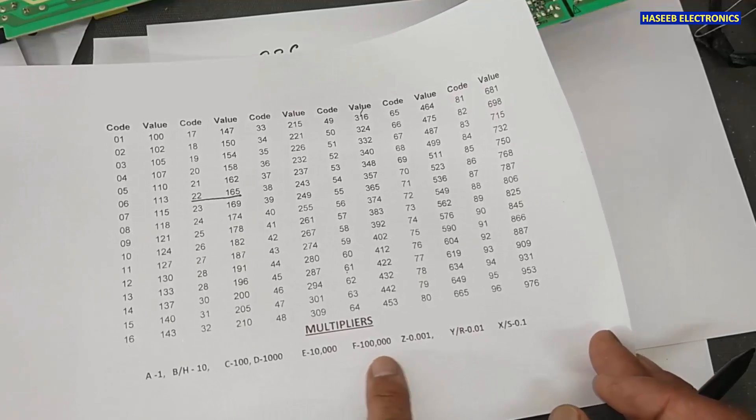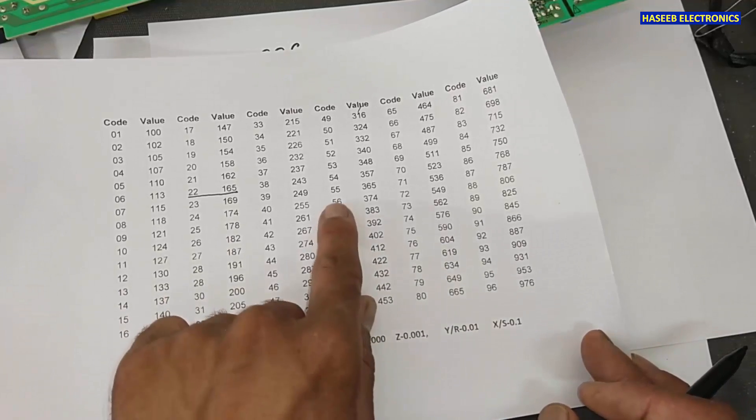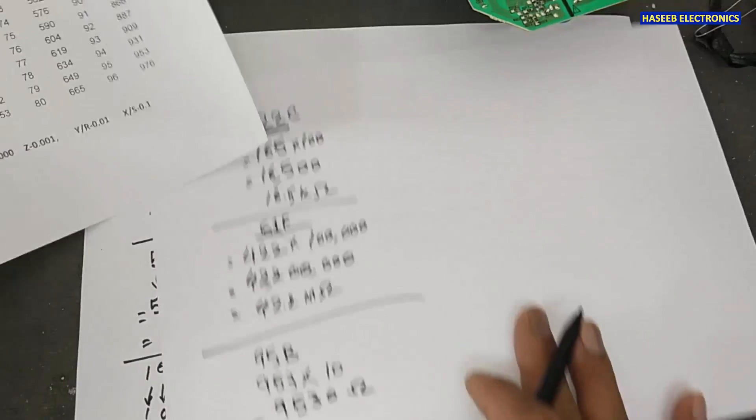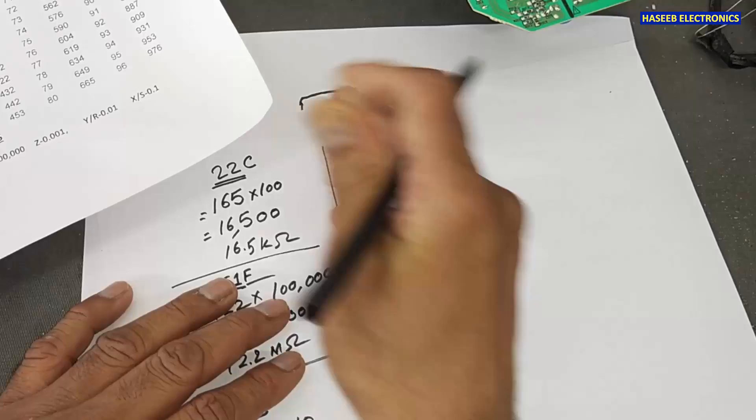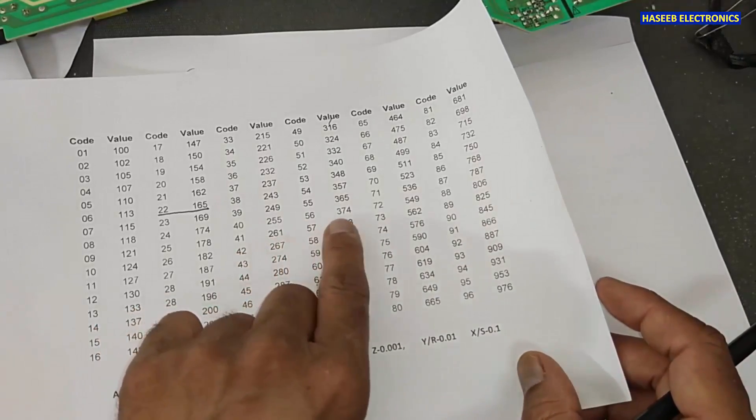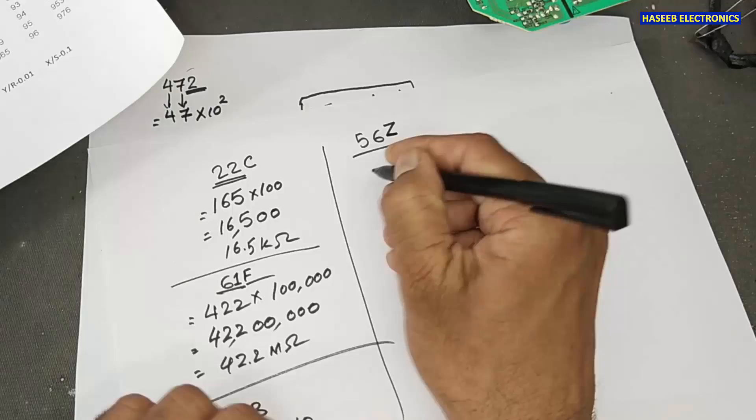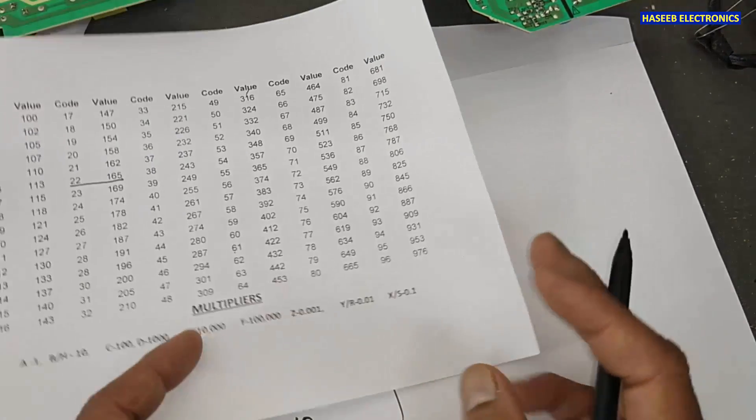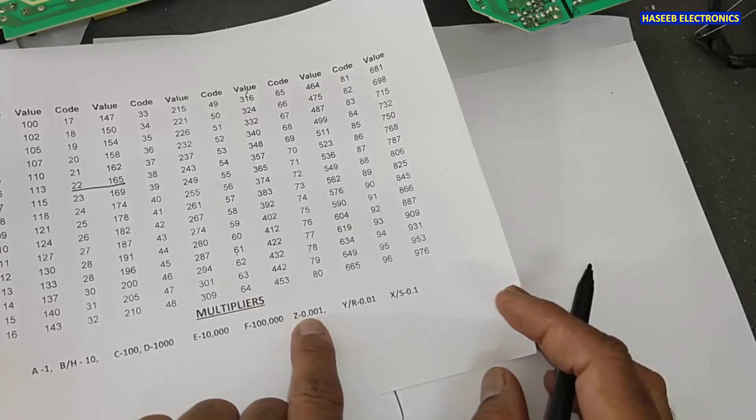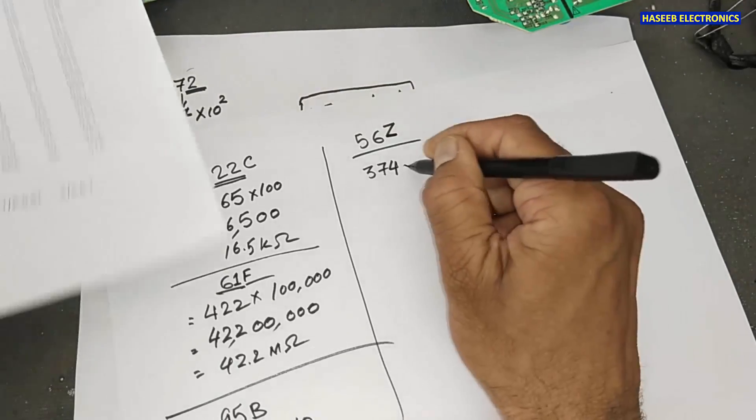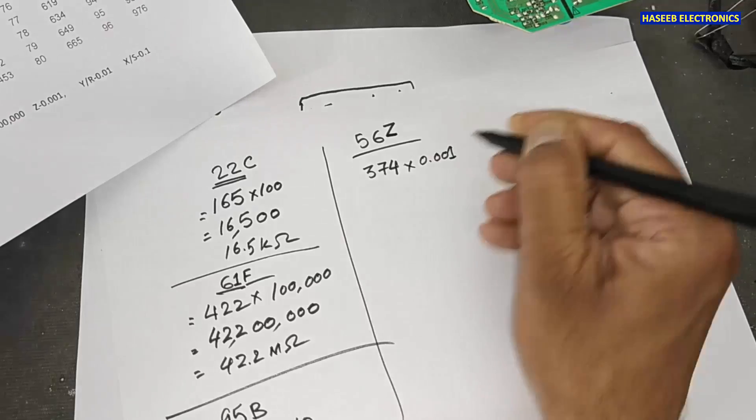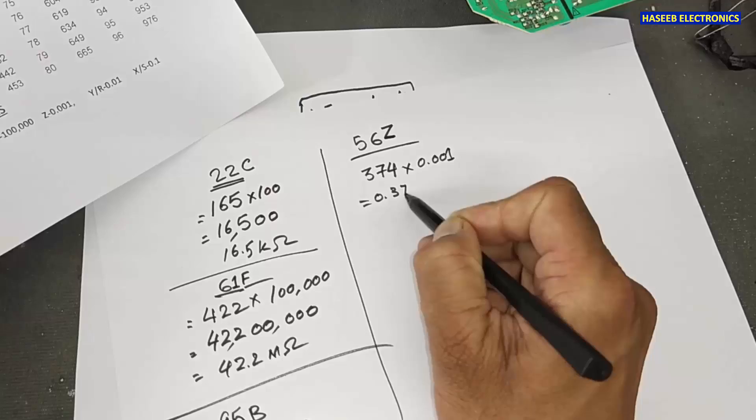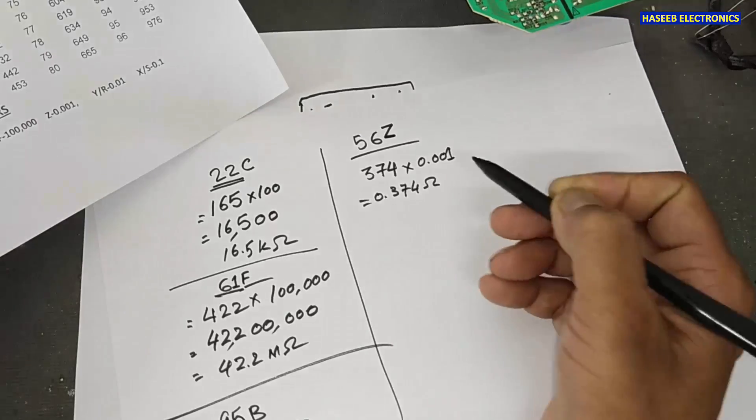And it has multipliers. If we have, for example, 56 Z. We will go in the 56 number 374. Z that is 0.001. Multiply with 0.001. That means 3 decimals here. 0.374 ohm resistor.